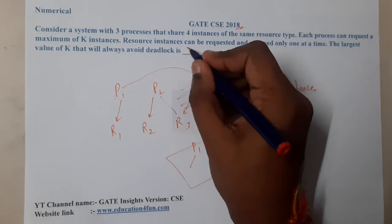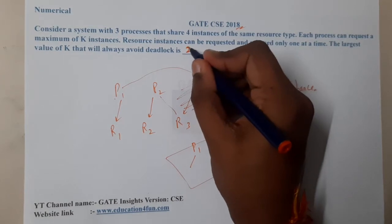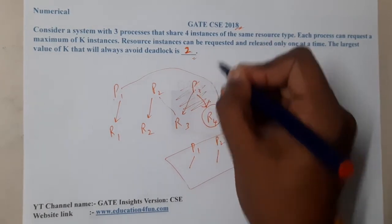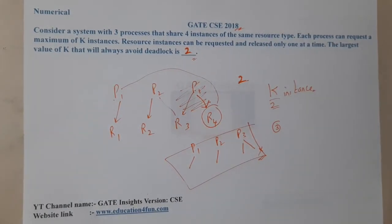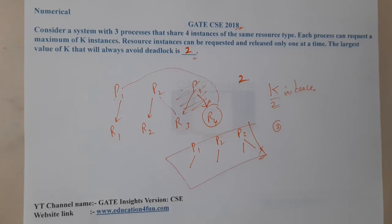So the best answer is k equals two. Most of these questions can be solved directly using the trial and error method. I hope everyone got a clear idea.